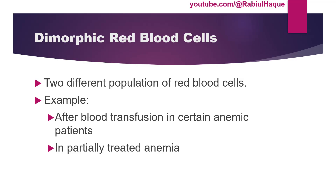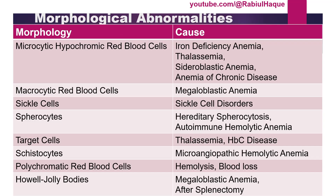The last slide is a summary of the various morphological types of red blood cells we can encounter along with their common causes. You don't have to memorize this now — once we go through all these topics you will understand them easily. This concludes today's lecture on red blood cell morphology. I hope this video was helpful. In our next lecture we will talk further about the various types of anemia. Until next time, take care and stay blessed. Thank you.